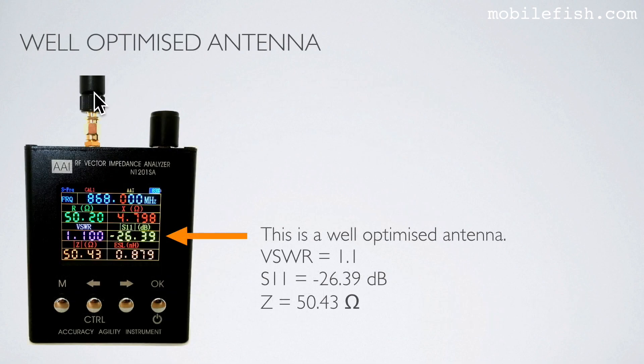This particular antenna is a well-optimized antenna. As you can see, the VSWR is 1.1, the return loss is minus 26.39 dB, and the antenna impedance is 50.43 ohms.